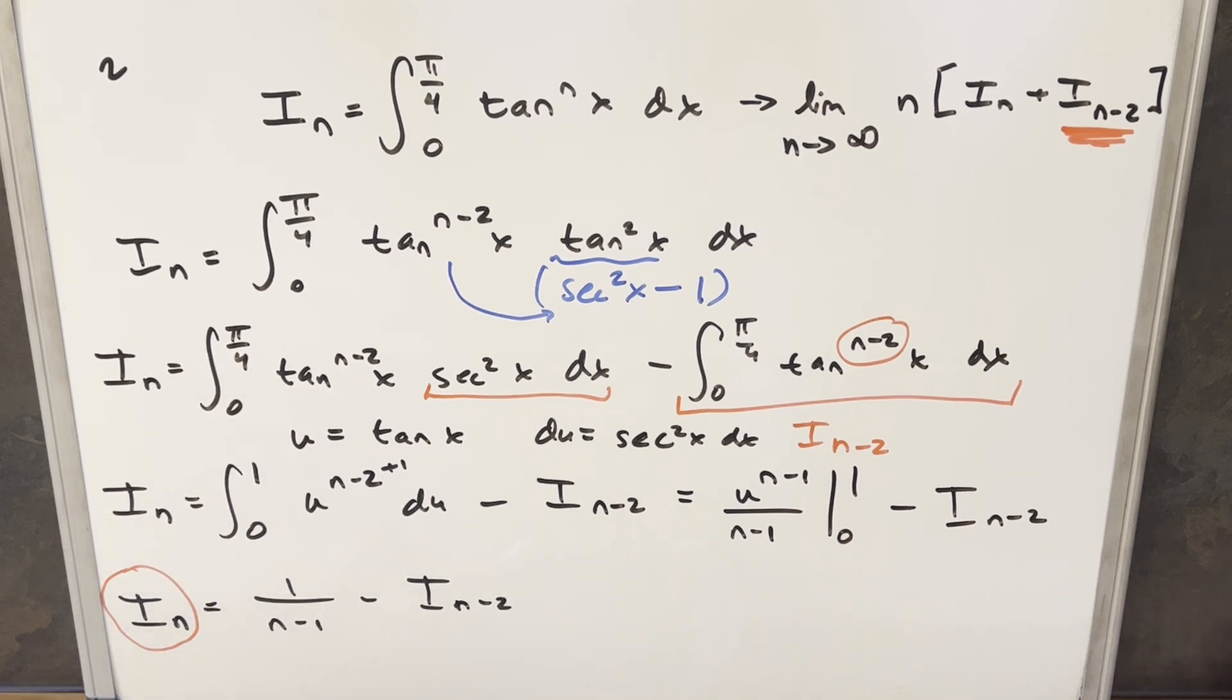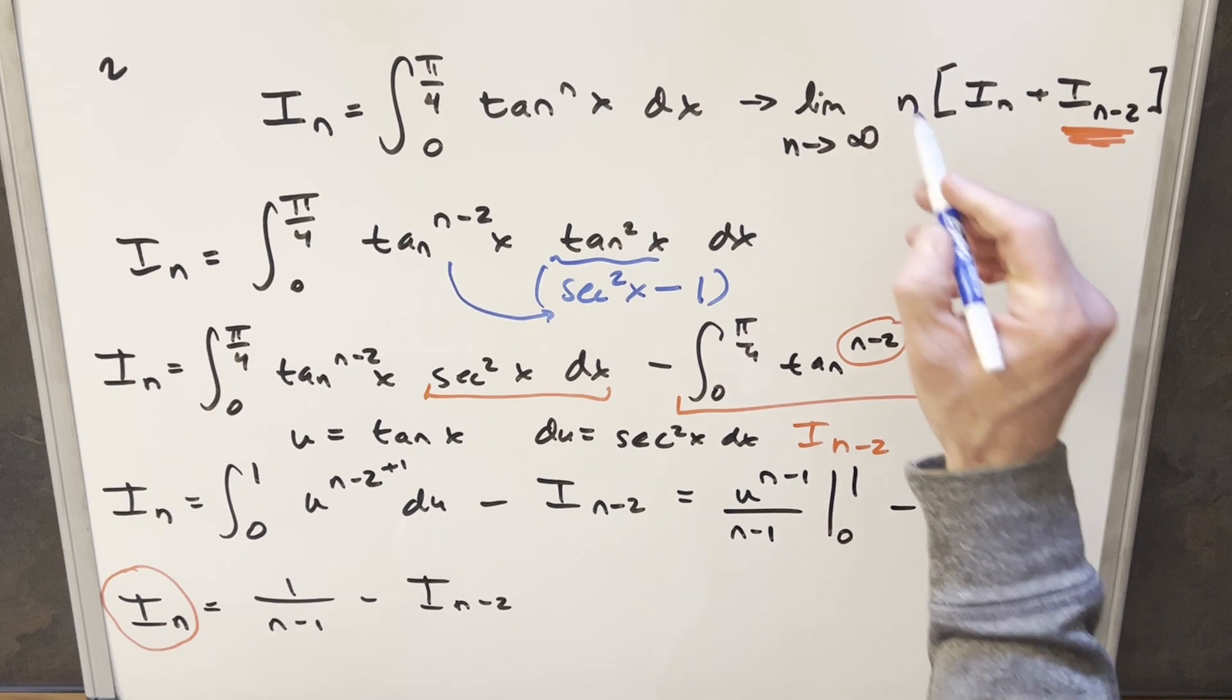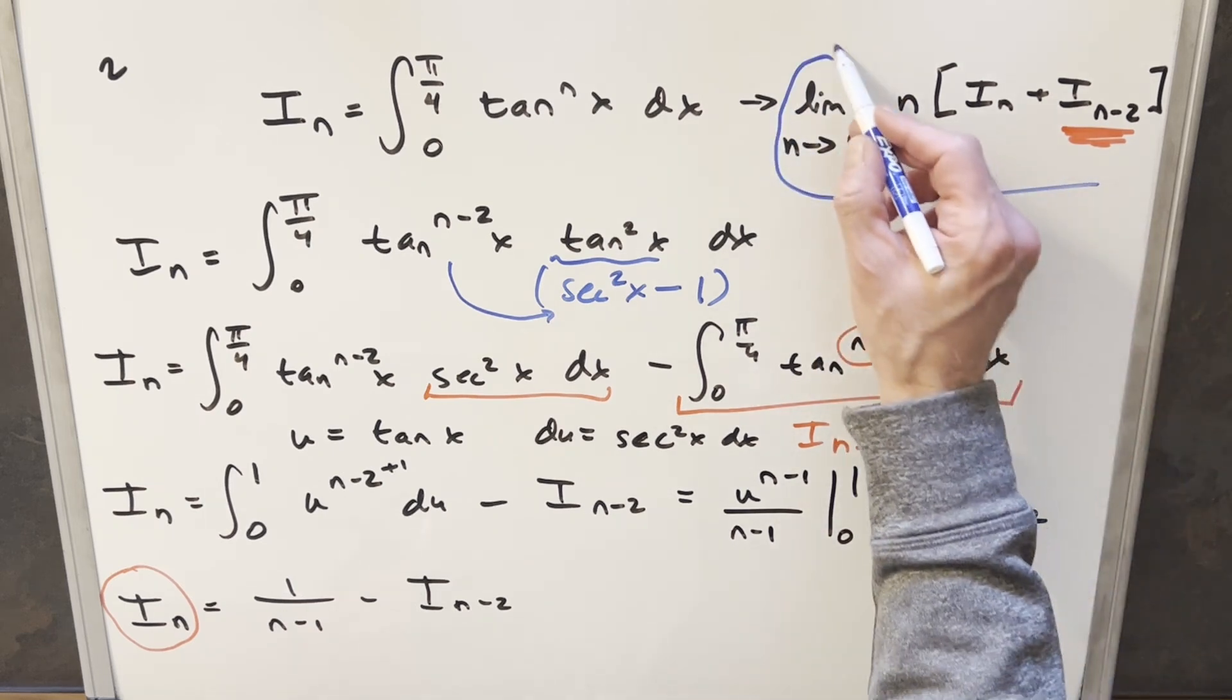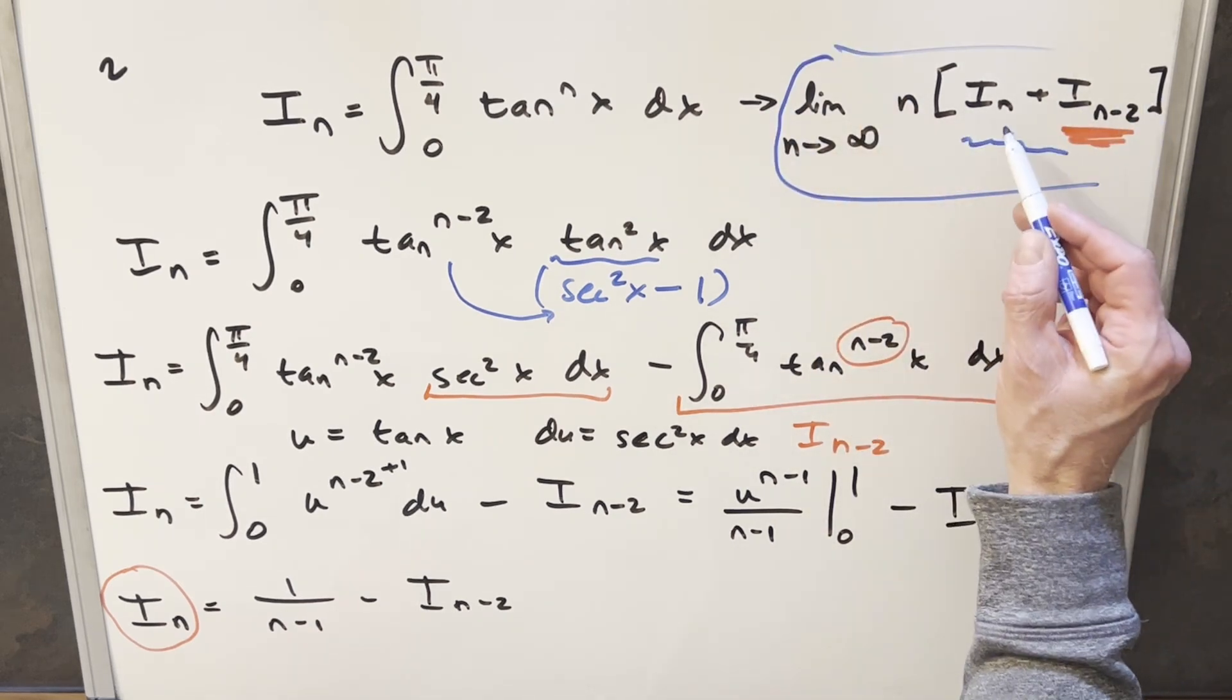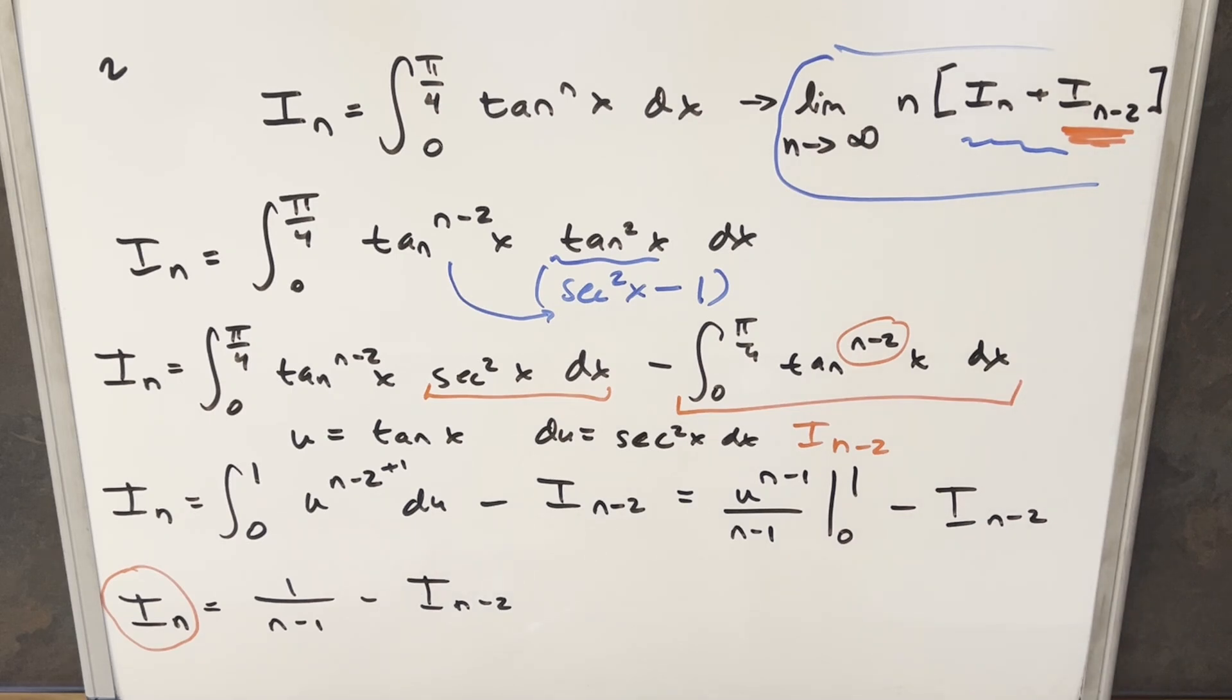But then we need to get back to our goal. What we're really trying to do is get back to this limit. And for this limit, what we really need is we need a value of I sub n plus I sub n minus 2. Well, all I really need to do is add I sub n minus 2 on both sides of this equation. So by doing that, this is going to cancel here, and so we have our value for I sub n plus I sub n minus 2, and that's just going to be 1 over n minus 1.